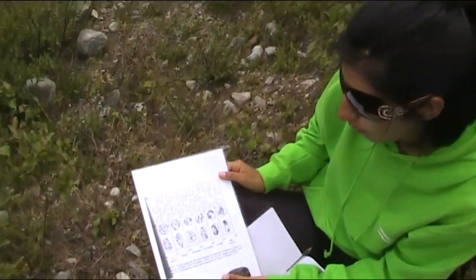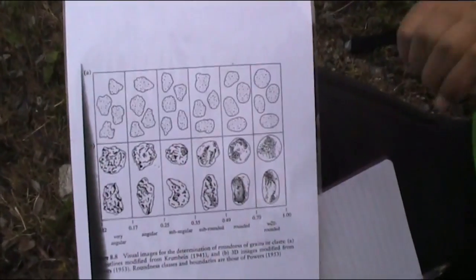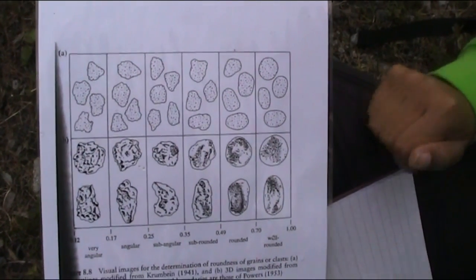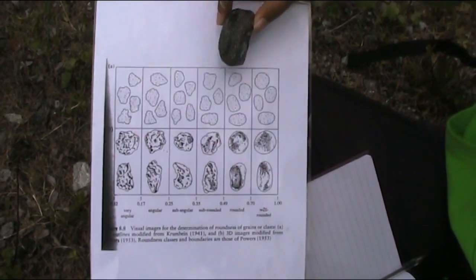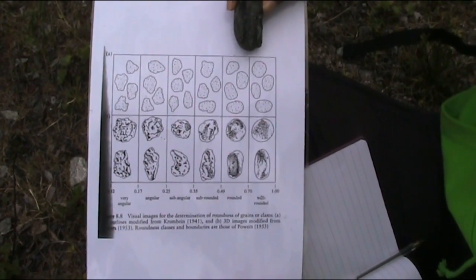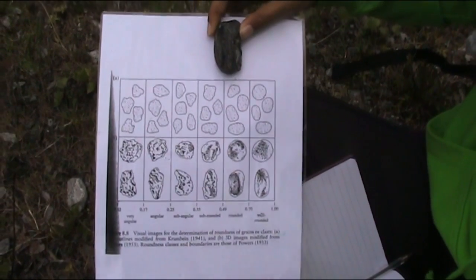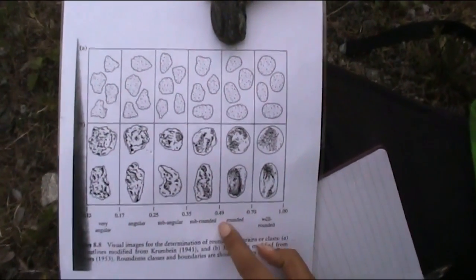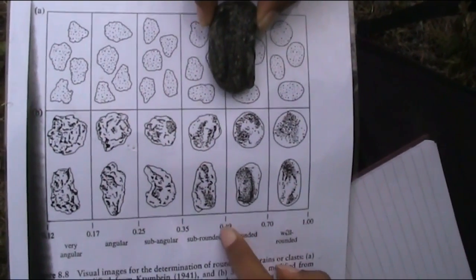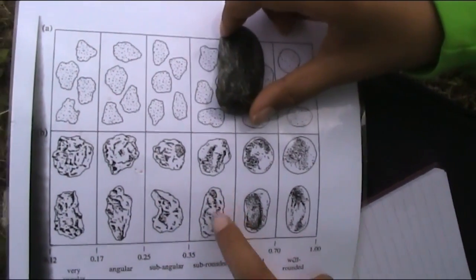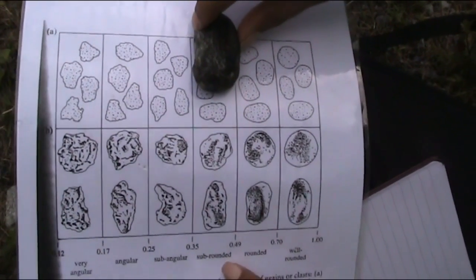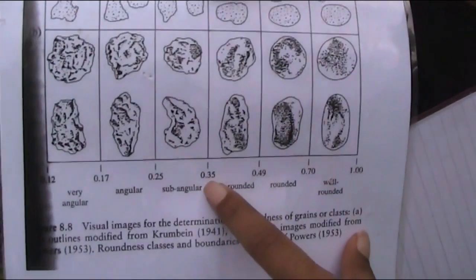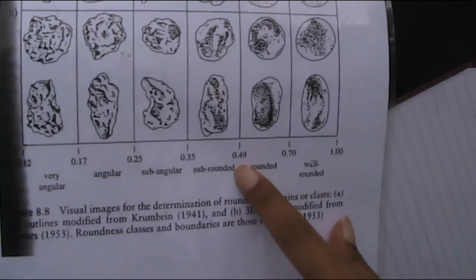This is a little table of visual images for the determination of roundness for grains or clasts. It's modified from the Krumbein 1941 model. So again, I've got the rock there. You've got to compare what one does it look like most. I'd say it's between the rounded and sub-rounded one. So if I identify more, you've got little bits here and there. If I turn it around, as you can see, it'll look quite similar to that. So that would be sub-rounded, which has figures between 0.35 to 0.49 millimeters.